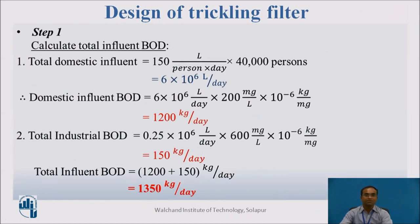Step 1: Calculate the total influent BOD. First, calculate the total domestic influent: 150 liters per capita per day multiplied by 40,000 persons gives 6 × 10⁶ liters per day (6 MLD). The domestic influent BOD is 6 MLD × 200 mg/L × 10⁻⁶ kg/mg, giving 1,200 kg per day.